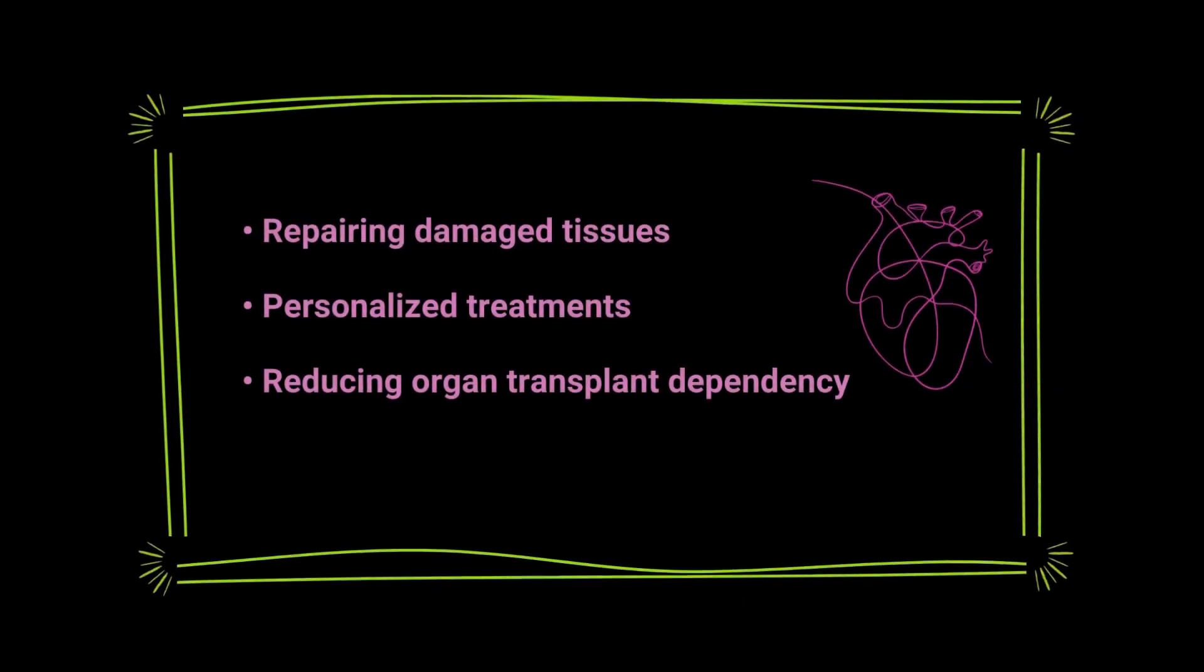Stem cell therapy involves using special cells in the body that can develop into different types of cells. Researchers are exploring using stem cells to replace the dopamine-producing cells lost in Parkinson's disease. By transplanting these new cells into the brain, the hope is to restore dopamine levels and improve motor function in people with Parkinson's. I talk more about stem cell types and dopamine-producing cells in this video linked above.